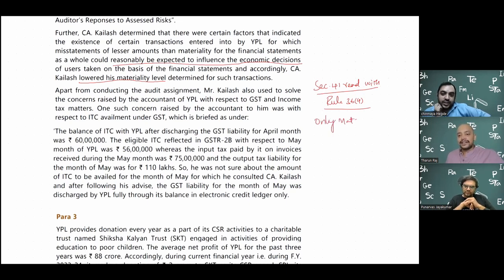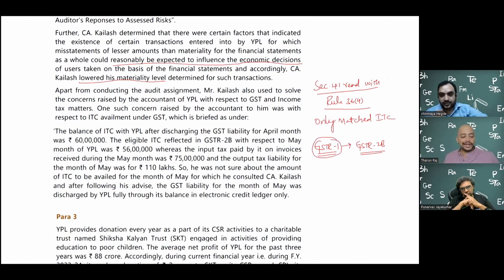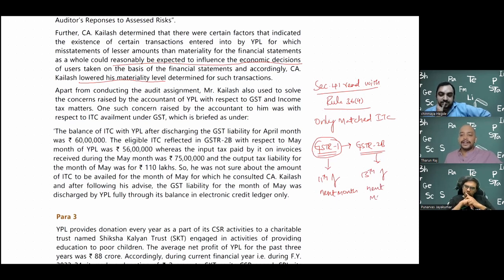Then the matching concept was introduced - ITC taken must match the supplier's liability as reflected in GSTR-2B. Initially, the government allowed a 20 percent allowance for unmatched ITC. This was reduced to 10 percent, then 5 percent, and now under Rule 36(4), only matched ITC can be availed - zero percent deviation allowed. ITC in GSTR-2B comes from the supplier's GSTR-1, which is filed by the 11th of the next month. GSTR-2B is generated by the 13th of the next month.